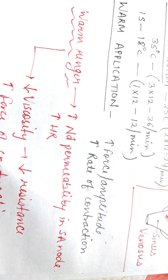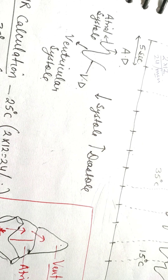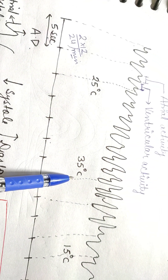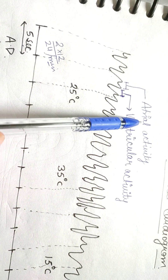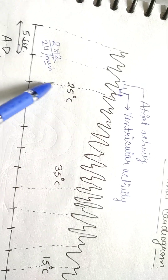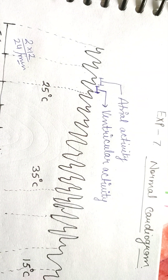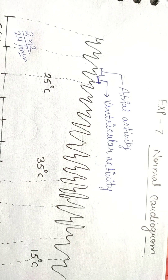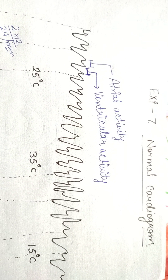This is a simple experiment showing the normal cardiogram. You can be asked about the anatomy of the heart, how warm application changes force and rate of contraction, and which deflections represent atrial versus ventricular activity. In the next experiment we'll be talking about the properties of cardiac muscle. You just have to answer to the point in your viva. Thank you so much for watching — see you in the next video.